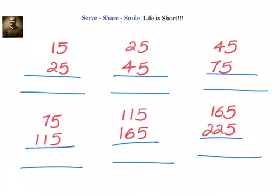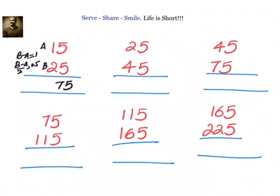Let us practice more examples. We have 15 into 25. Here a equals 1 and b equals 2. B minus A equals 1, and b minus a by 2 equals 0.5. Since b minus a is odd, the right-hand side is 75. Left-hand side: 1 into 2 plus 1 equals 3, plus integer part of 0.5 which is 0. Answer is 375.